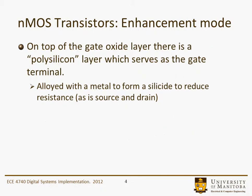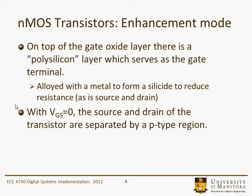On top of the gate oxide layer there is a polysilicon layer — in quotes because it's not really polysilicon so much anymore — which serves as the gate terminal. It's usually alloyed with a metal to form a silicide to reduce resistance, similar to the source and drain, giving very low resistance.